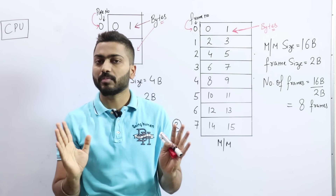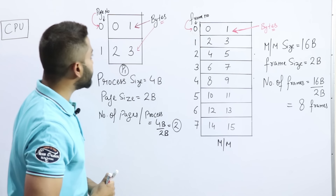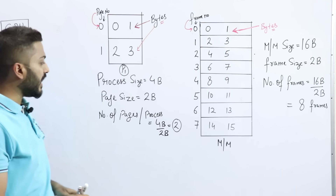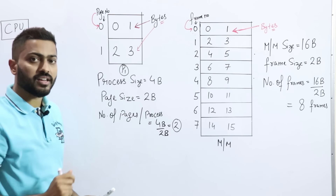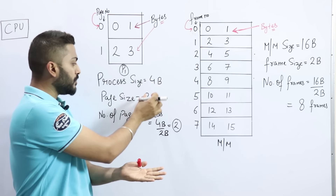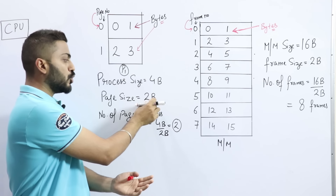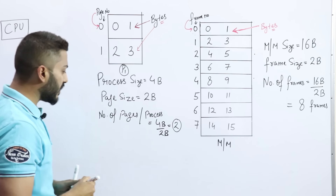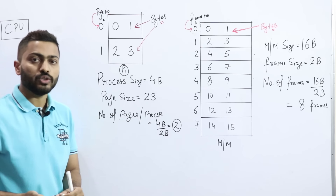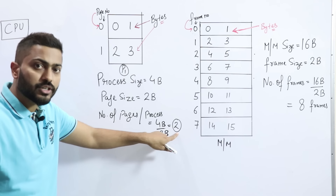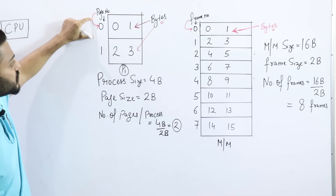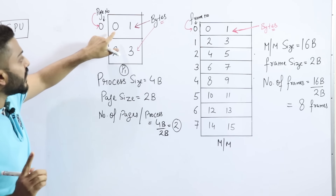Let's see paging with an example. Let's say we have a process P1. The P1 process size is given as 4 bytes, and the page size is also given as 2 bytes. So the number of pages will be 4 bytes divided by 2 bytes, which equals 2. So there will be 2 pages — page number 0 and page number 1.